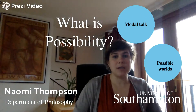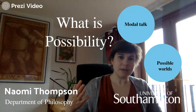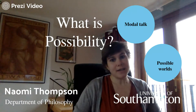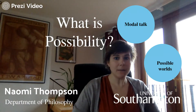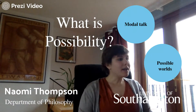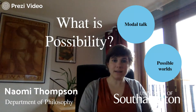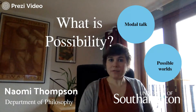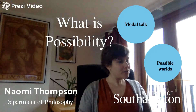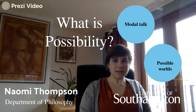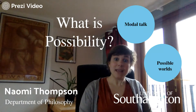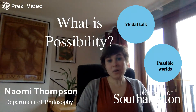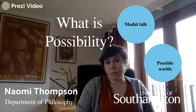So we've got this distinction between descriptive sentences about the way that the world is or will be, and modal sentences about how things must be or might have been. And now it seems much harder to give an account of what makes modal sentences true or false, because it's not the case that we can just go and find the relevant thing in the world. If you want to find out whether 'Naomi might have been a dentist' is true, you can't just go and find out what Naomi actually does, because that sentence isn't about the way things are in the actual world — it's a sentence about possibility.